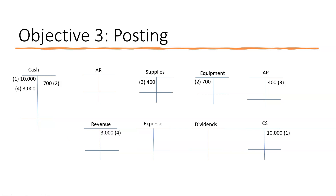Transaction five: paid salaries of $1,500 to workers — debited salaries expense, credited cash — posted to the ledger. Transaction six: pay $200 of amount owed from transaction three — debited accounts payable $200, credited cash $200. Transaction seven: performed services, received $500 cash and billed $2,000 — debited cash $500, debited accounts receivable $2,000, and credited service revenue $2,500. So two debits totaling $2,500 and one credit of $2,500 to revenue.